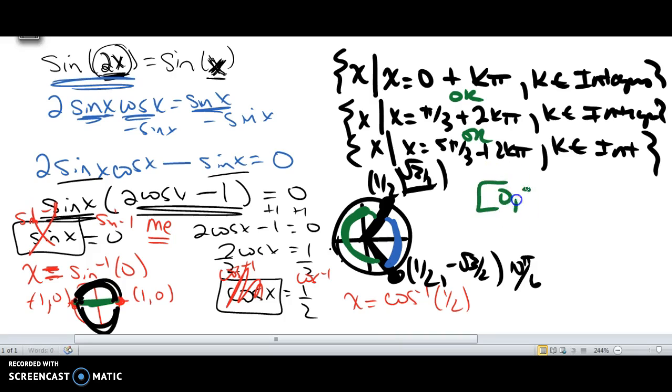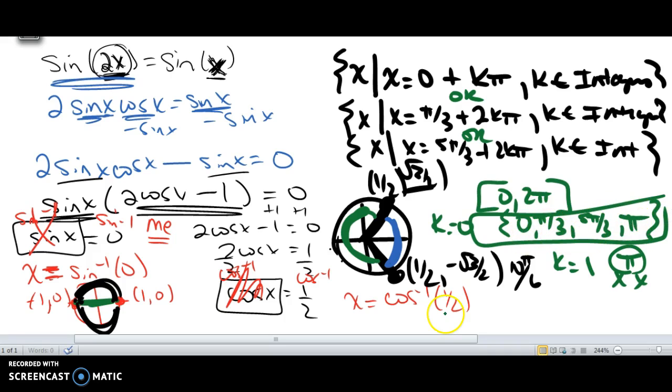If they give you an interval, say between zero and 2π, you take all your formulas and start subbing in. k equals zero gives you zero, π/3, 5π/3. Then you sub in k equals one: this one gives π. If I sub it into here I'm adding 2π on top of that, which is outside. K equals one has two things that are too large, but this π is still within the domain. If you want to be nice and put them in order: zero, π/3, π, 5π/3—that's how you do one that looks more like a quadratic.